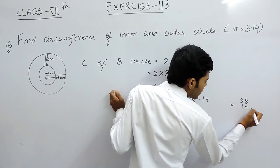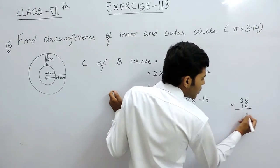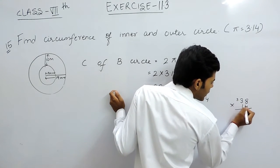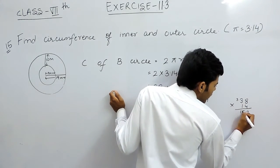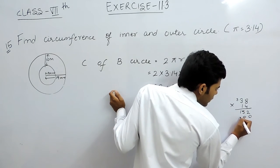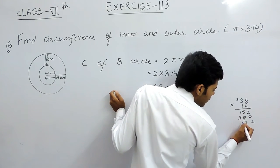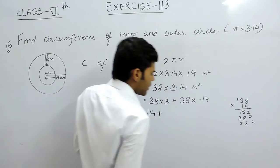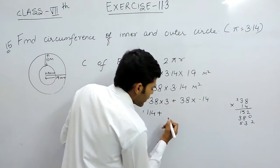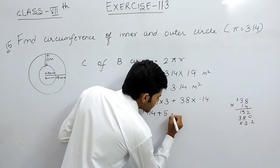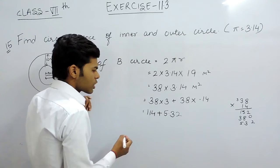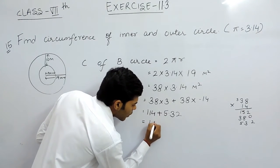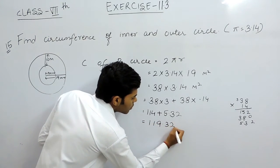38 into 14, that will be equals to 32 carry 3, 12, 15, 0, 8 and 3. So 2, 3, 5, that will be equals to 5.32. So we will add this and that will give us 119.32 meters. So this is the circumference of this bigger circle.